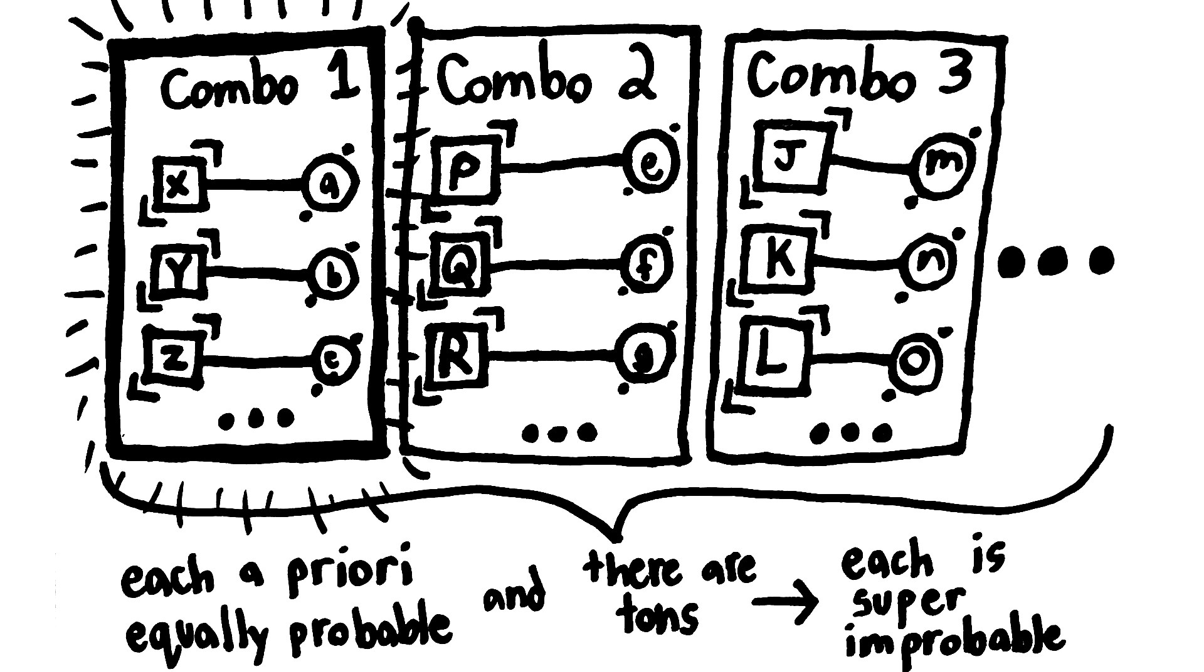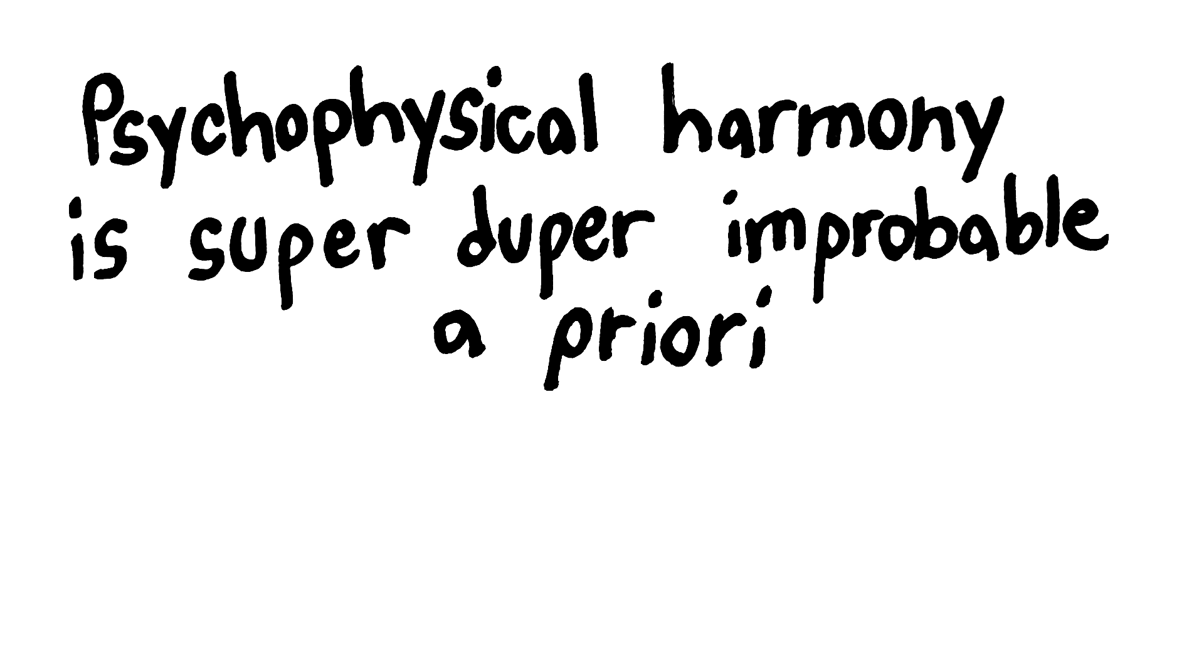So, we need to get a very specific kind of combination of psychophysical laws out of the vast number of different combinations. So, the a priori prior probability of psychophysical harmony is unimaginably small.